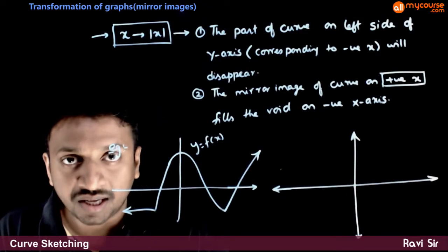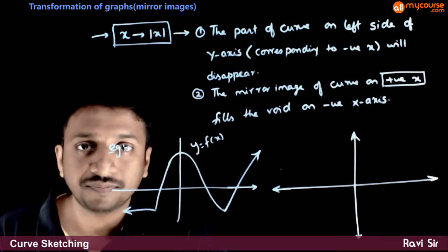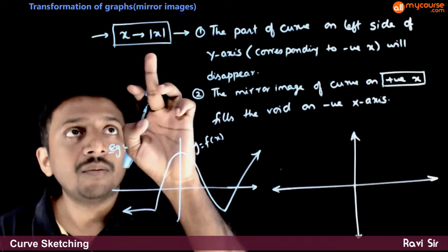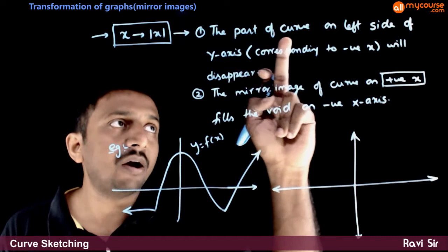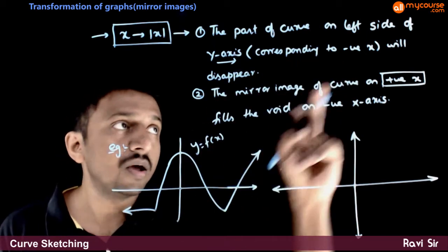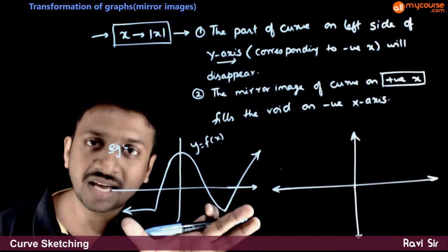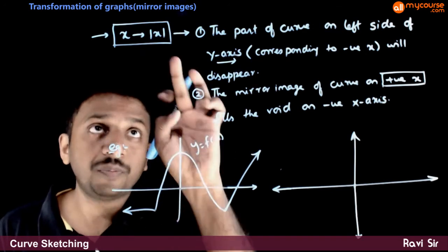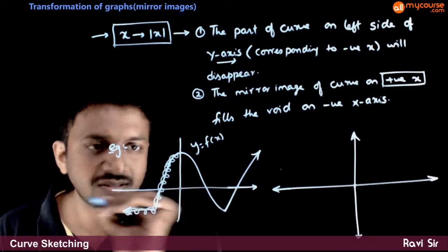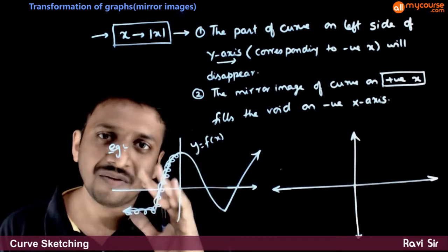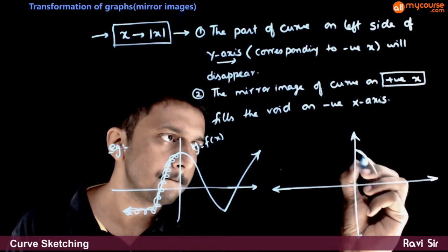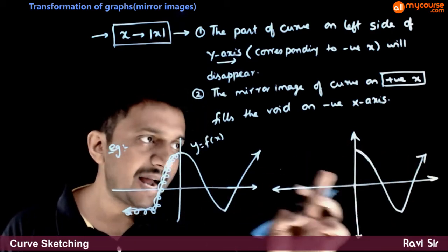The next transformation we are going to study is what happens if you put |x| in the place of x. Two things happen when mod x replaces x. The first thing is the part of the curve on the left side of the y-axis — the graph corresponding to the negative x-axis — will disappear. So if you take the graph of y = f(x), the graph corresponding to the negative values of x will disappear, and only the right-side graph is left.